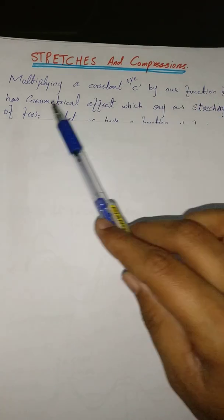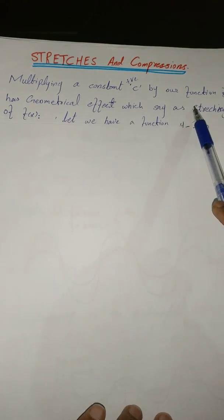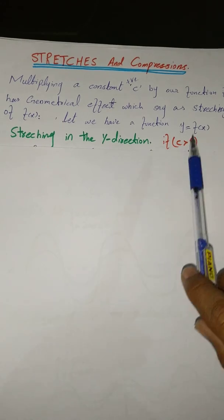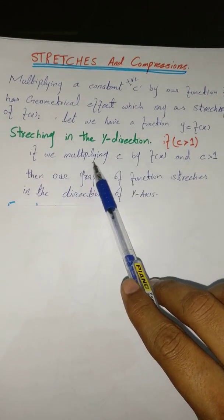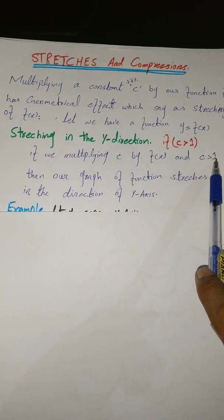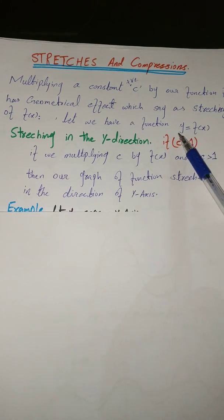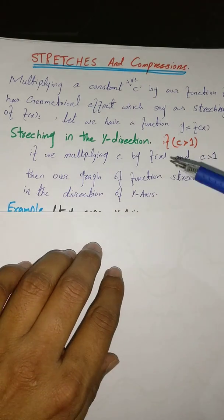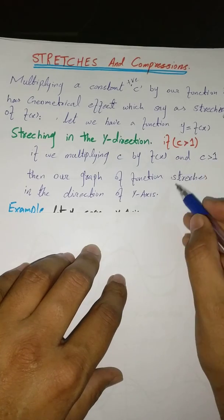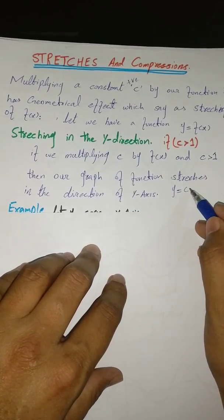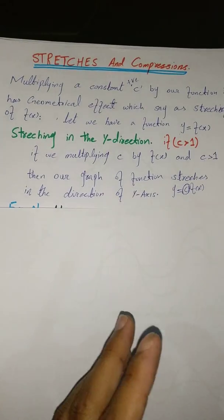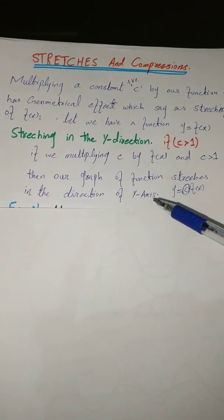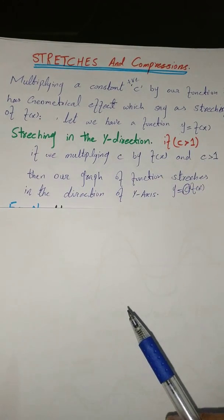Whenever we multiply C by f(x), the geometric effect is called stretching. If C is greater than 1, the stretching of the graph is in the direction of Y. So when we multiply C by f(x) and C is greater than 1, it becomes Y = C·f(x), and our function is stretched in the direction of Y — we can also say the graph is stretched vertically.